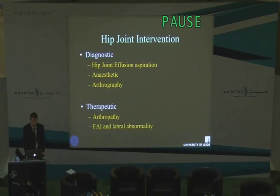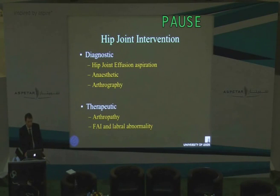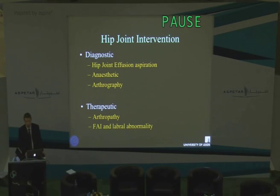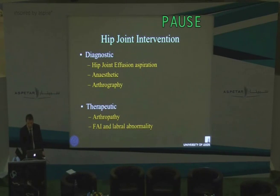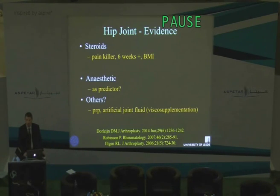If we look at the hip first, we can perform diagnostic intervention for aspiration, injecting anesthetic to see if pain is ablated, also to perform MR arthrography, and then there's therapeutic procedures we can perform for arthropathy, including FAI and labral abnormality. So what's the evidence? There's a recurring theme throughout this talk.